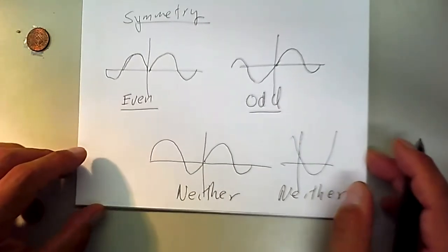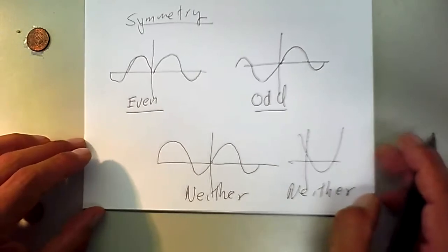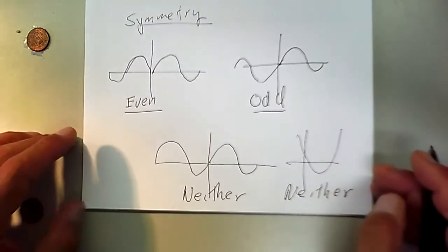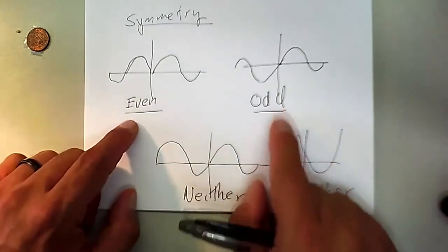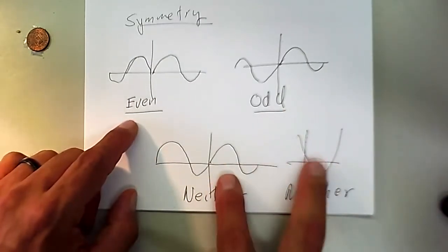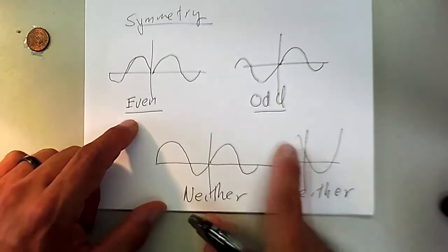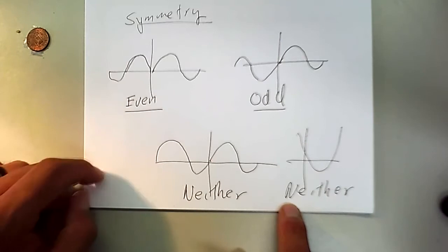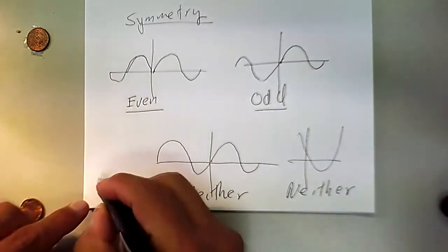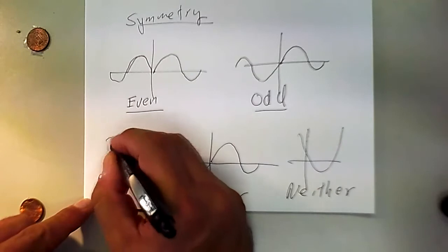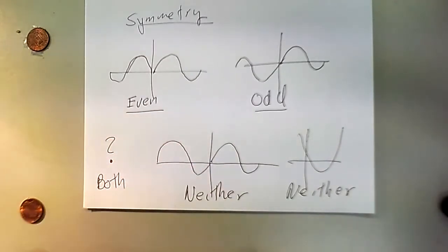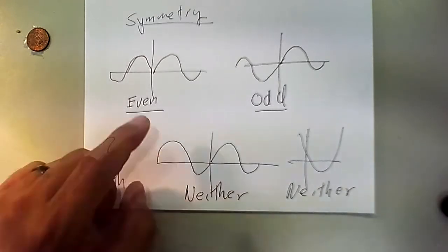There is, for the most part, one continuous function from negative infinity to infinity that is both even and odd. There are hundreds and millions of examples of neither, and then there are some that are both. I'm going to leave it blank and let you think: what kind of function will be both even and odd?